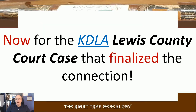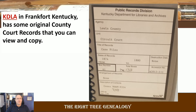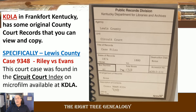Now for the part you came to this video for. The Kentucky Department of Libraries and Archives had a particular case in Lewis County that finalized the connection of John Cooley and Nancy Sarton for me. KDLA is in Frankfort, Kentucky. They have original court records for different counties, and in this case, specifically Lewis County records — case number 9348, Raleigh versus Evans. That's how it was titled in the court case index. I was researching Lewis County records and looking under Raleigh, not knowing anything about the Evans at the time.